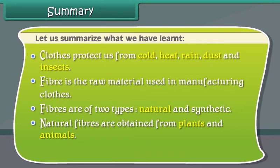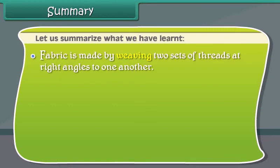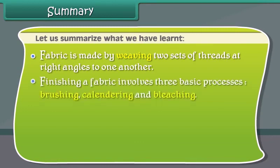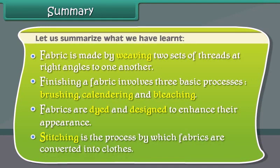Let us summarize what we have learned. Clothes protect us from cold, heat, rain, dust, and insects. Fiber is the raw material used in manufacturing clothes. Fibers are of two types: natural and synthetic. Natural fibers are obtained from plants and animals, while synthetic fibers are man-made. Fabric is made by weaving two sets of threads at right angles to one another. Finishing a fabric involves three basic processes: brushing, calendaring, and bleaching. Fabrics are dyed and designed to enhance their appearance. Stitching is the process by which fabrics are converted into clothes.